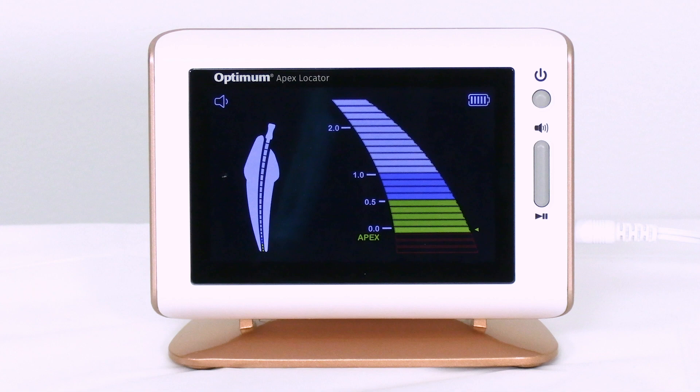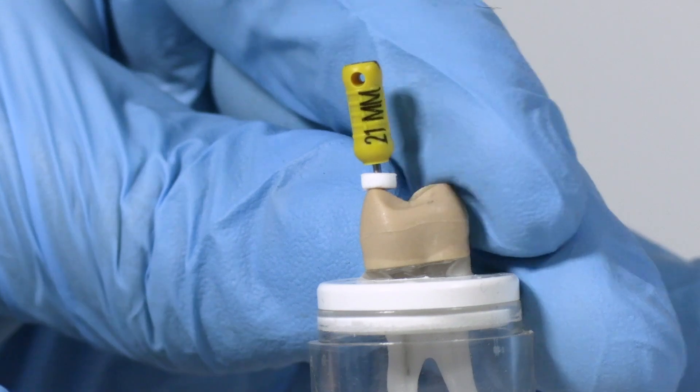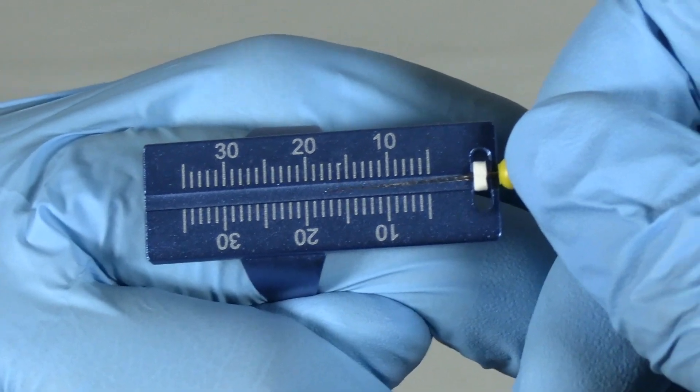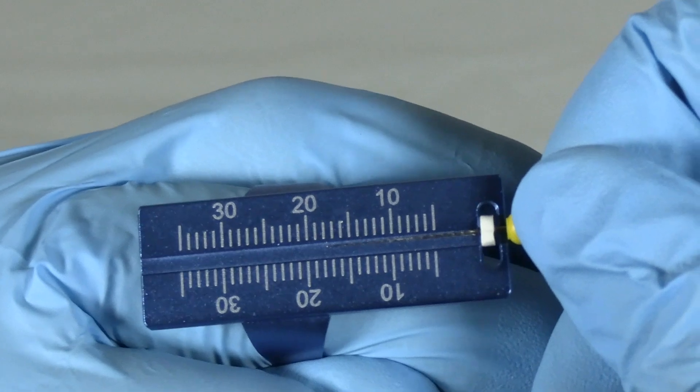Based on the measured length subtract 0.5 to 1.0 mm to determine the working length. When the file reaches the apex, adjust the rubber piece set on the endophile to the reference point, then pull out the endophile. Measure the length between the top of the file and the rubber piece and this is the working length of the tooth.